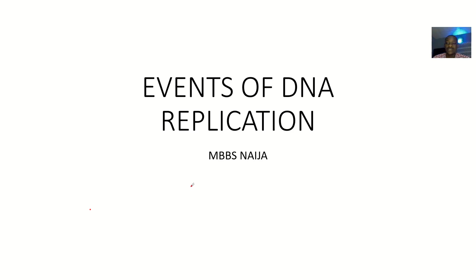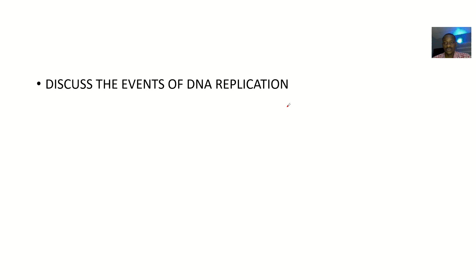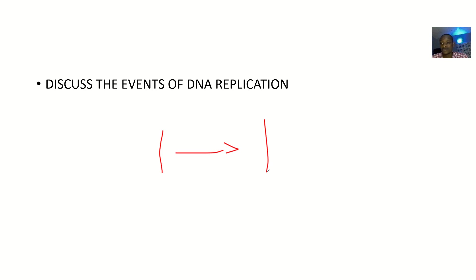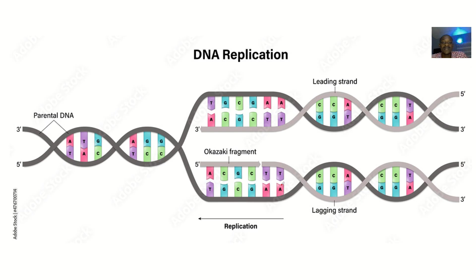We'll talk about the events involved in DNA replication. Replication means you have this thing here, and you are trying to make another version of that thing exactly like it. So we'll talk about the steps involved in DNA replication — that's the formation of new DNA. This old DNA is being unwound, and they are now forming two new DNAs that look like it. This is the parental DNA, and these are like the kids — you are forming the kids from this DNA.